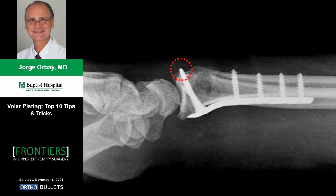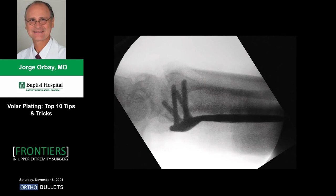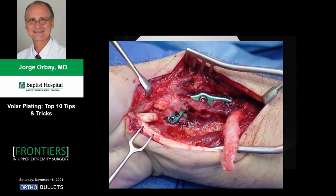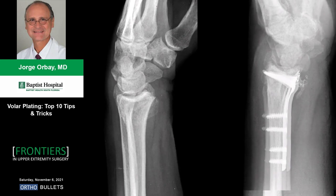It is important to avoid pitfalls. Although we go volar specifically to avoid injuring extensor tendons, you can still injure them by making screws too long. Here is an example of EPL rupture caused by an overly long screw. You can also injure flexor tendons if the fracture is not reduced anatomically — the plate will not lie flat on the bone surface, and the tendons will suffer.